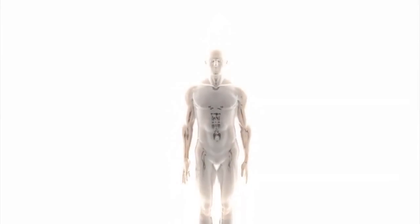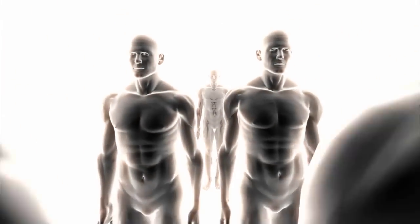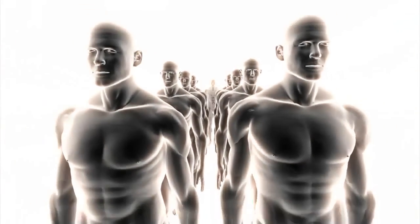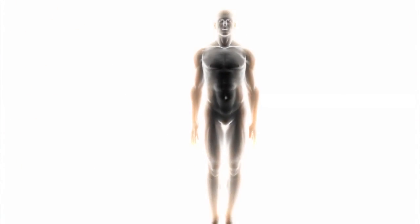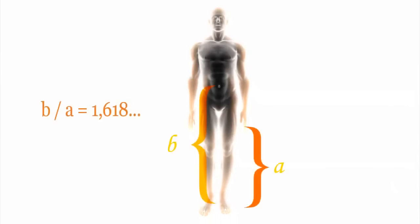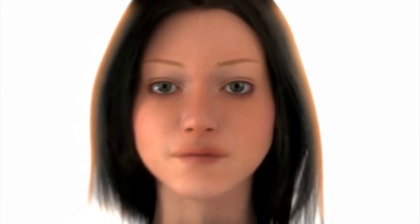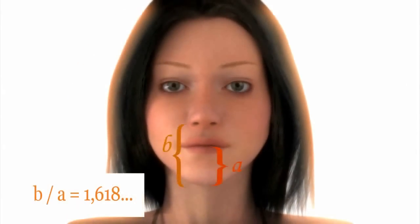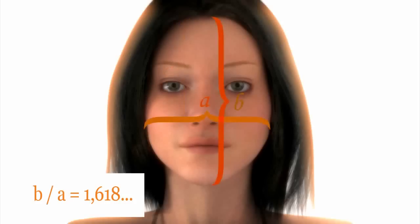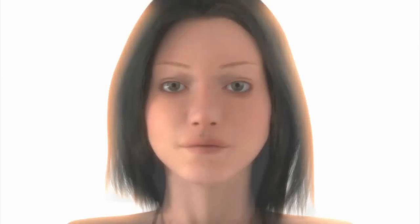As vision expert Dr. Stephen Marquardt proved as a result of his 25-year-long study, human faces and bodies designed pursuant to this ratio were accepted as beautiful by every single person in the world. If the aspect ratio of any form is 1.618, then this form is convenient to the golden mean.